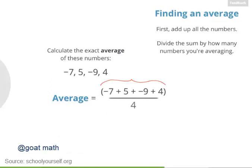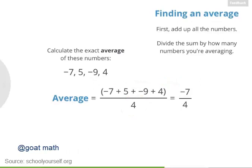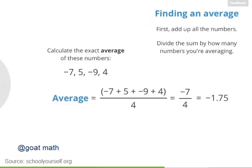You can add up these numbers and divide by 4. The sum turns out to be negative 7, and negative 7 divided by 4 equals negative 1.75. So with these two steps, you can find the average of any group of numbers.